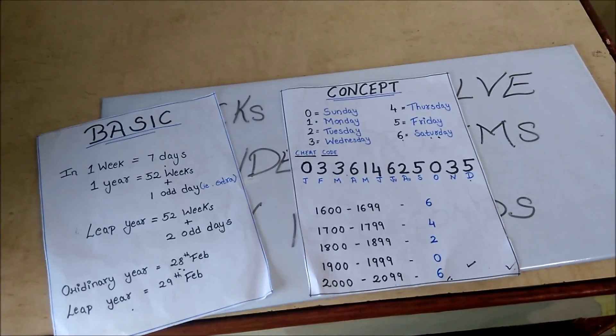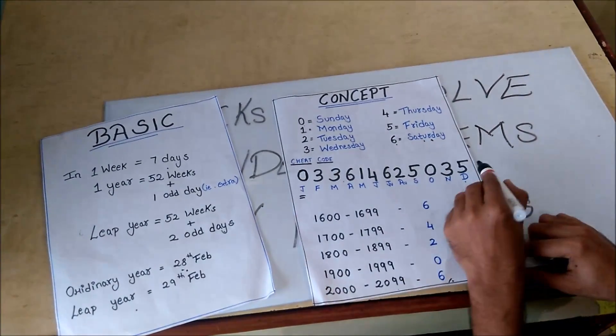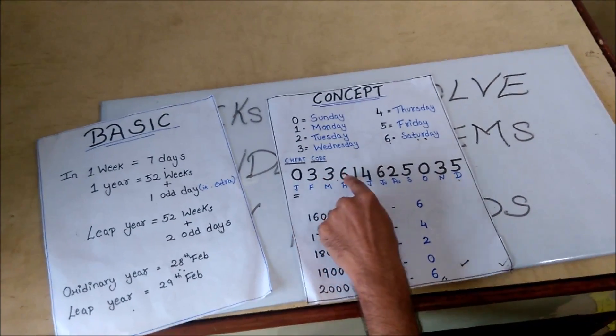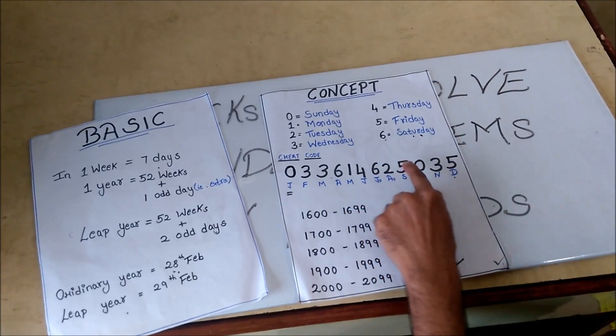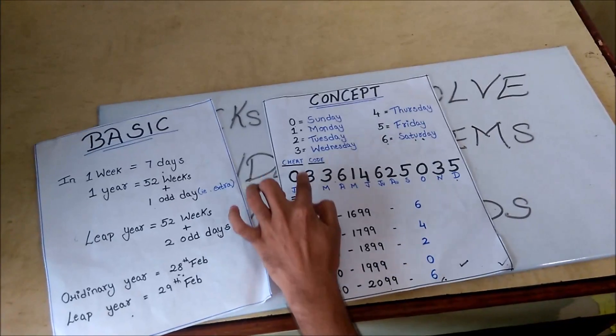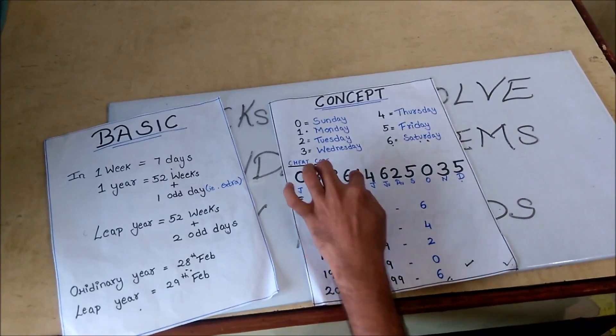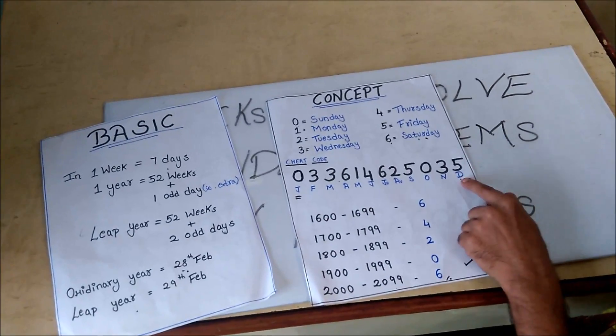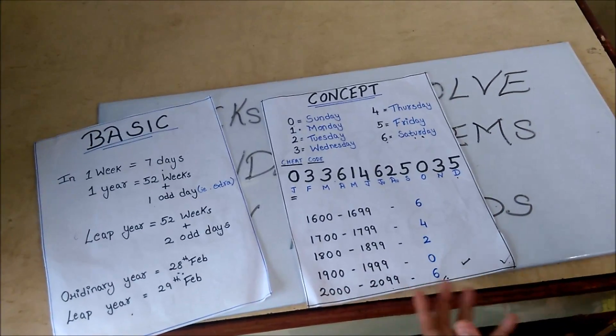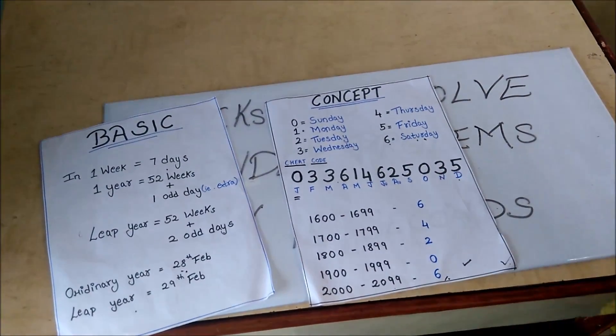The main important code in our whole problem will be this: the cheat code for the months. This is 033614625035. 0 stands for January, 3 for February, 3 for March, 6 for April, 1 for May, and so on. 5 for December. You can remember this as a phone number: 033614625035.